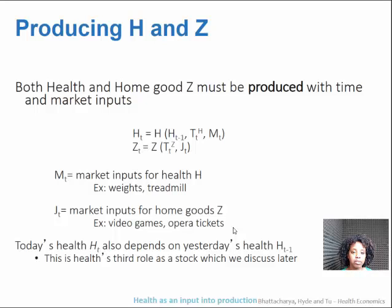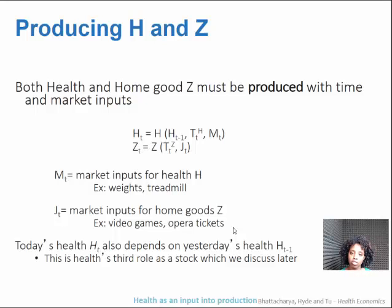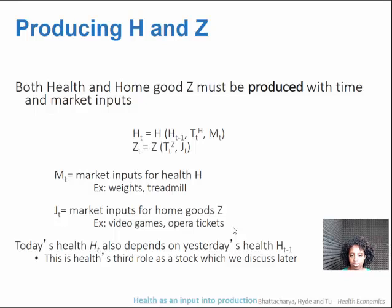Z sub t — your fun or non-health utility in a given time period t — equals z as a function of your time spent in those activities of fun and non-health utility, and also market inputs to that: video games, opera tickets, paints, whatever you're into.